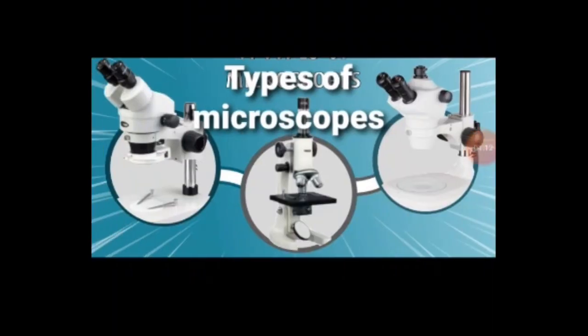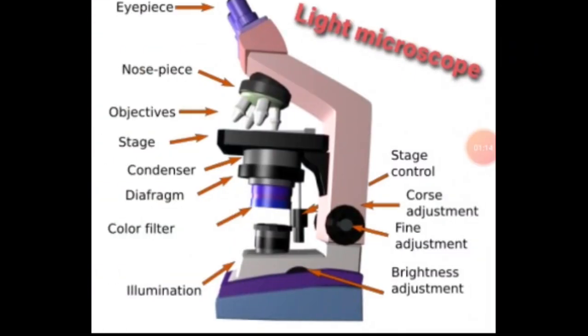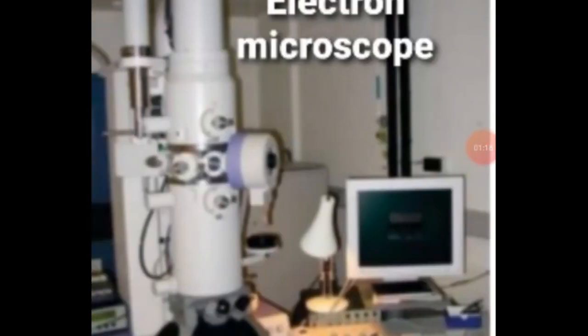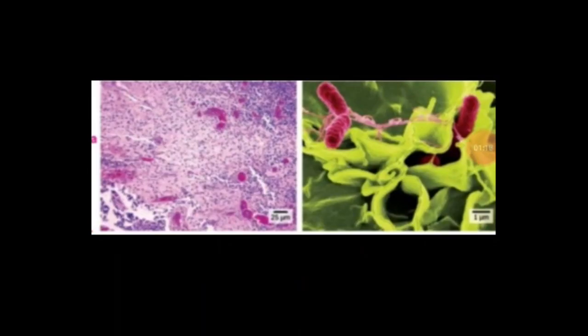Now we are going to study about types of microscopes: light microscope and electron microscope. You can see the difference between the image production of the two microscopes.